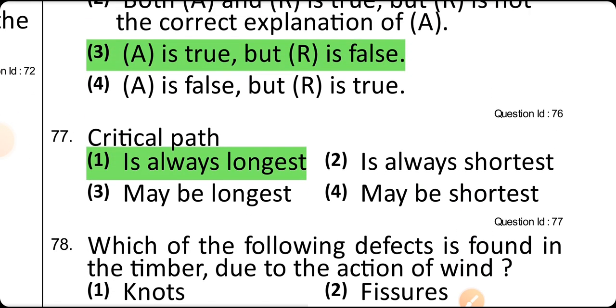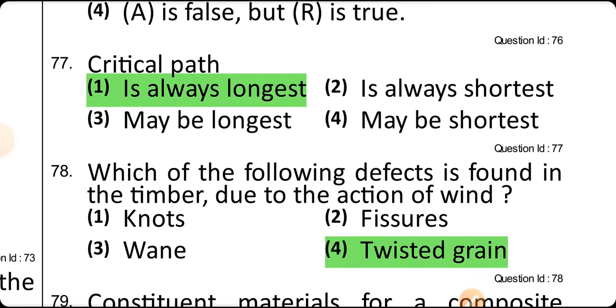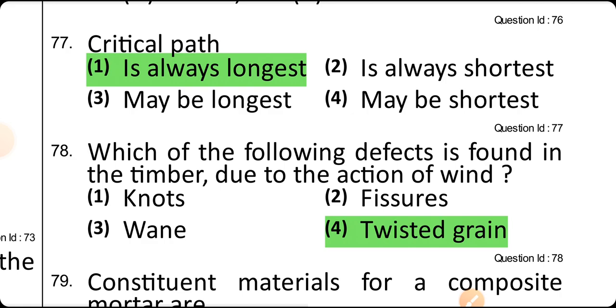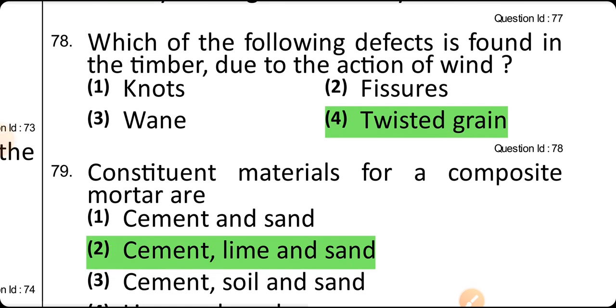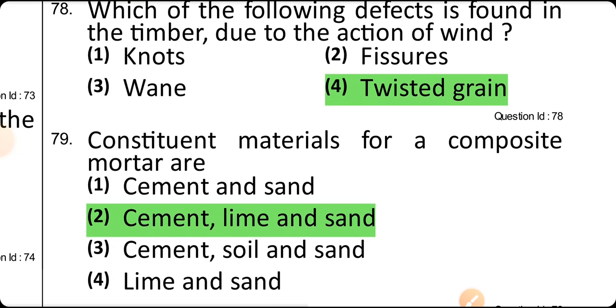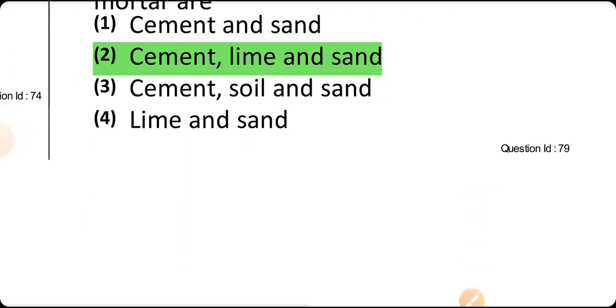The critical path is always the longest path. The defect found in timber due to the action of wind is twisted grain. The constituent materials for composite mortar are cement, lime, and sand.